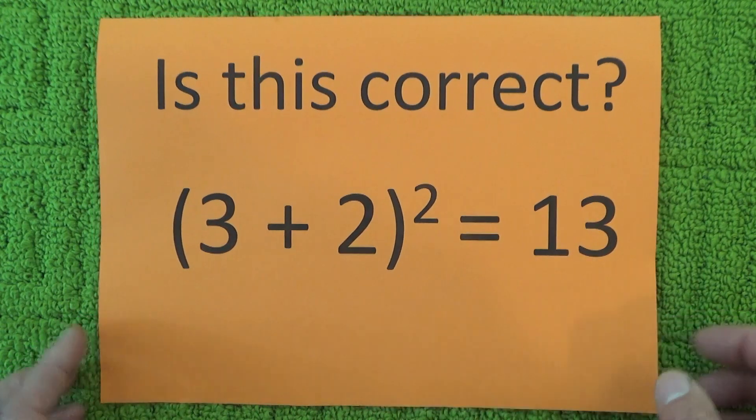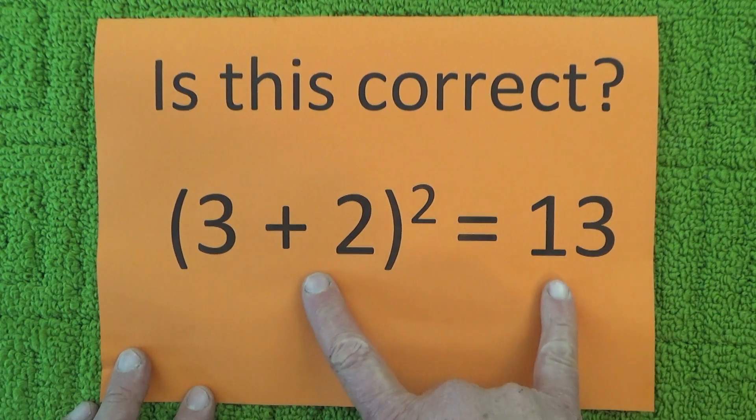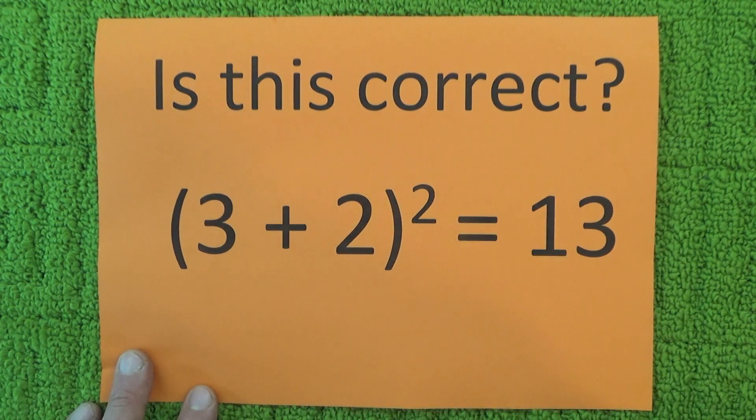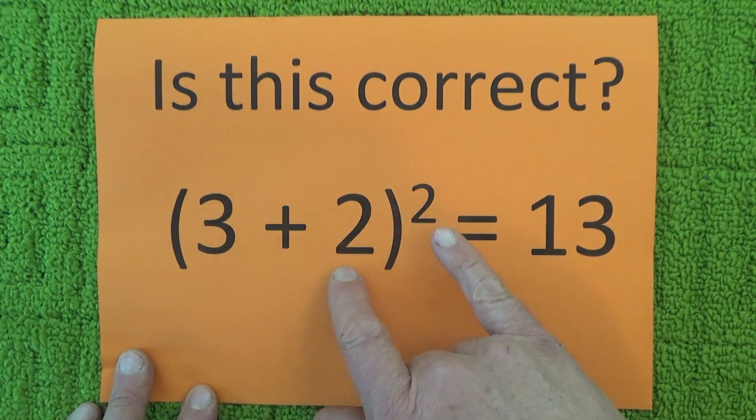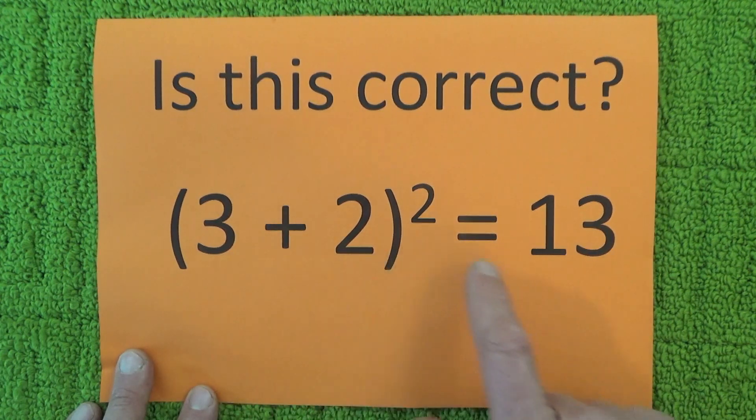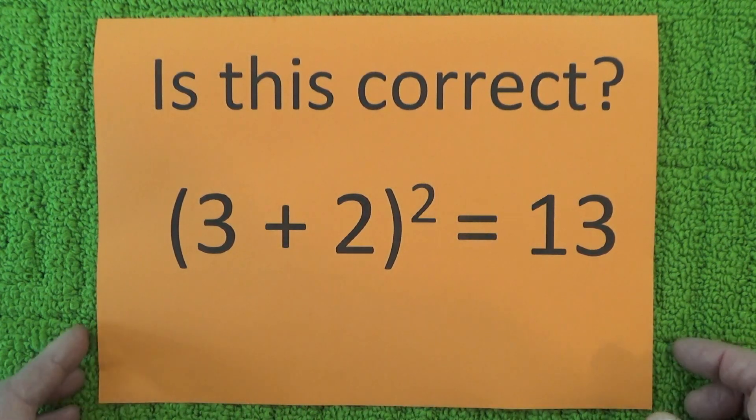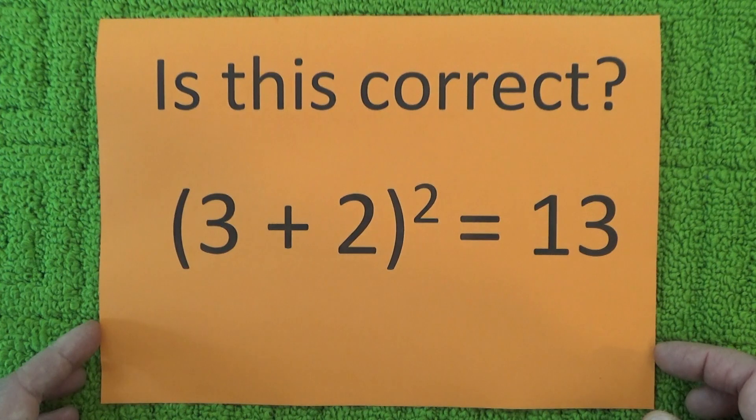But then I sort of had doubts because it was saying that actually was correct. When I looked at it, I thought what are they doing? They're obviously doing 3² which is 9, plus 2² which is 4, so 9 + 4 = 13, which has sort of got a little bit of logic to it.